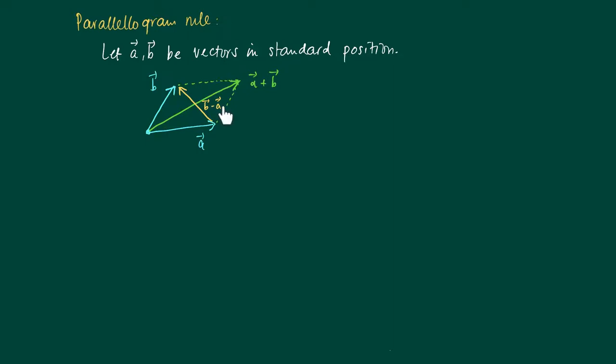And if we look at b minus a, we get a vector pointing from the endpoint of the vector a to the endpoint of the vector b. So we have actually the axis of the parallelogram. This is called parallelogram rule: a plus b and b minus a are the axes.